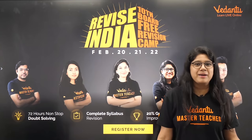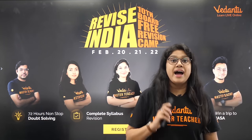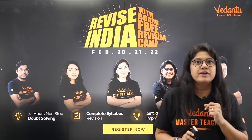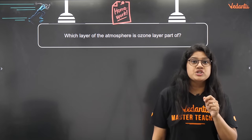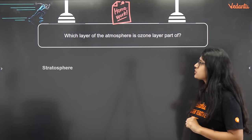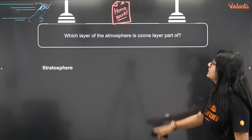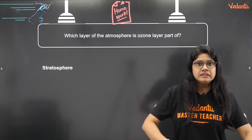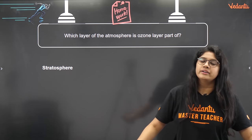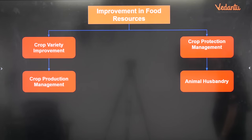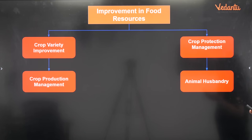Classes will be available till the 18th of March, so go and revise once again. A homework question was asked: which layer of the atmosphere has ozone? The right answer is the stratosphere. Majority of you gave the right answer. In today's class we'll be learning about crop improvement, crop variety improvement, crop production, crop protection management, and animal husbandry.